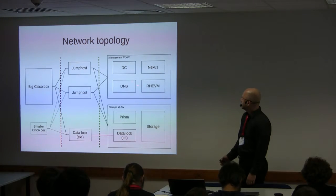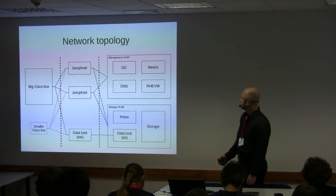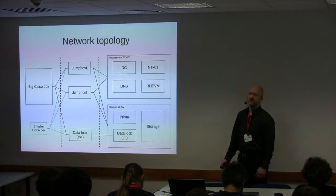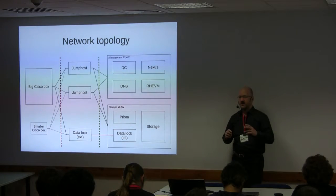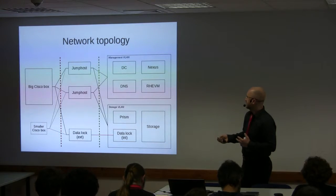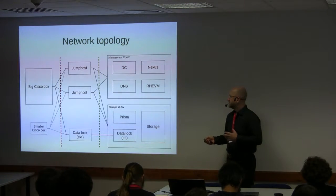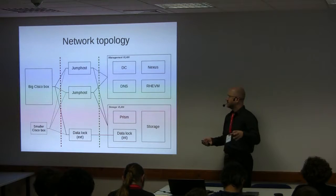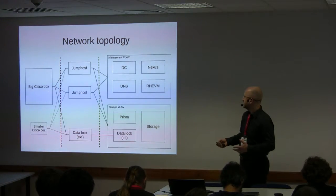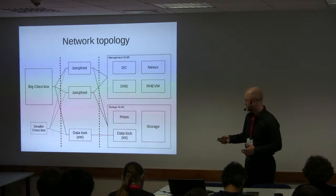On the management VLAN we have a domain controller — actually two, one physical and one virtual — an authoritative name server not used as a resolver, and the jump hosts run Unbound with multiple forwarders. Our internal authoritative name server is used to resolve our own DNS domain, and forwards other requests to the university's resolvers.